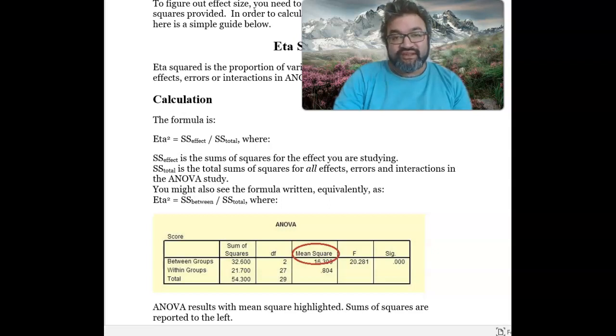The higher the sample size, the more likely the p-value will be less than 0.05. However, the effect size will tell us if it's clinically significant or something that should be looked at.